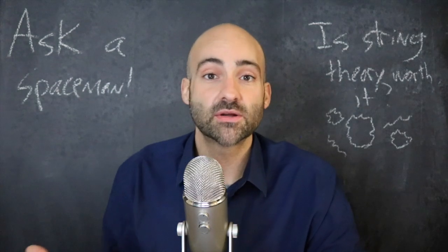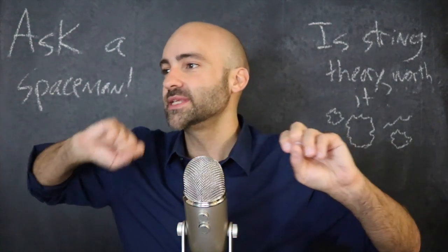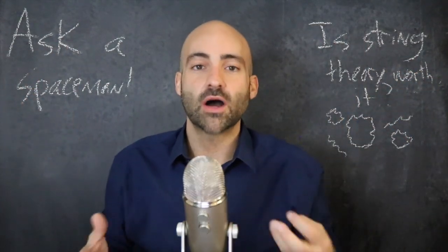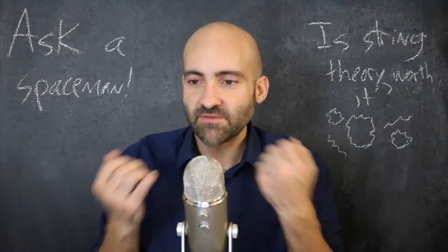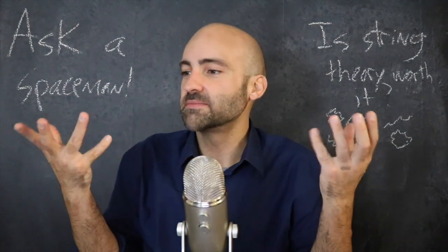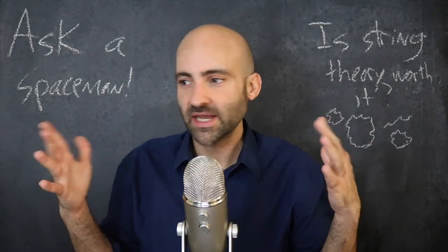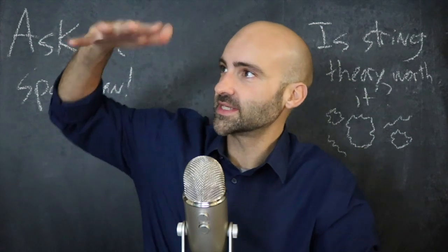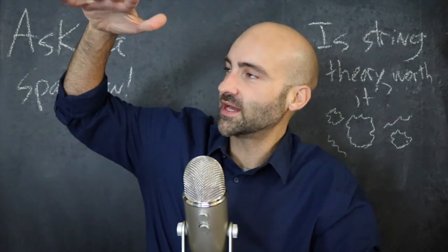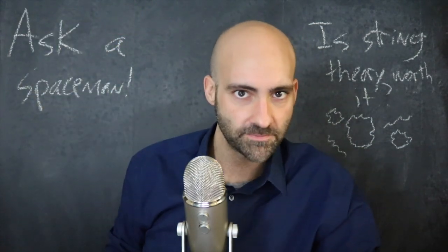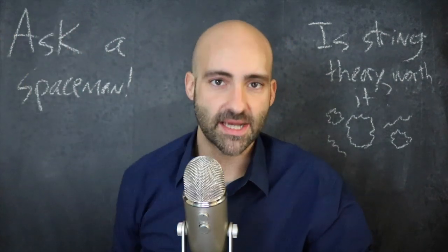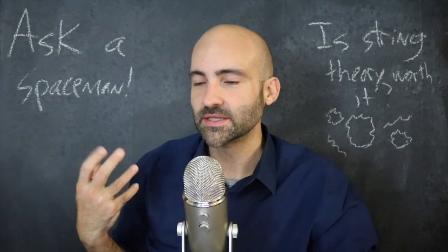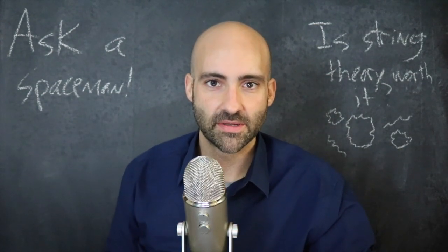In the standard model, everything we see — electrons, photons, Z bosons, all of these — are fields. These fields soak and permeate all of spacetime, like oil and vinegar inside of bread. They're always wiggling and jiggling and doing all sorts of stuff, and every once in a while a little piece of the field gets an extra excitation, gets a lot of energy, and we call that a particle.